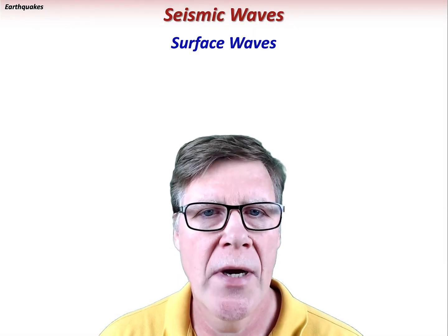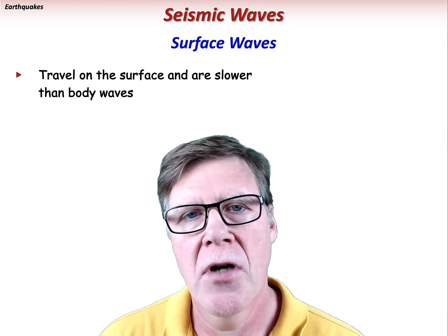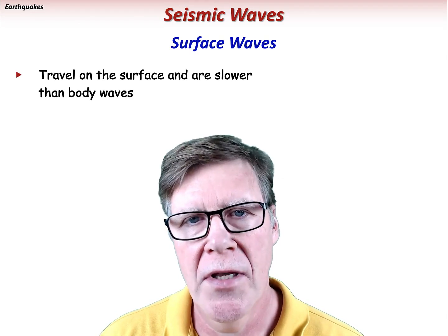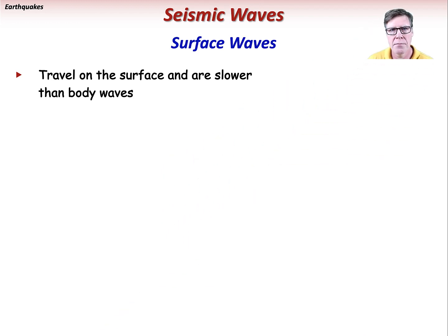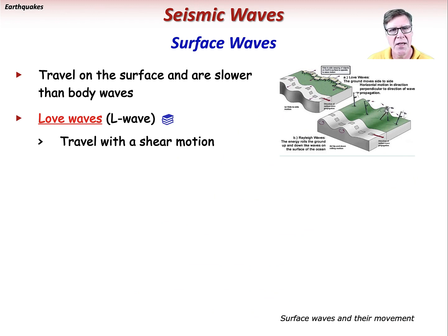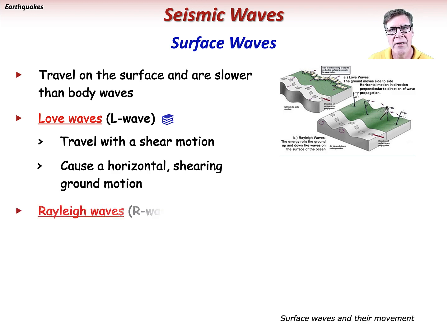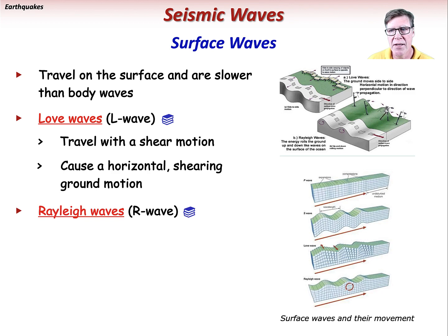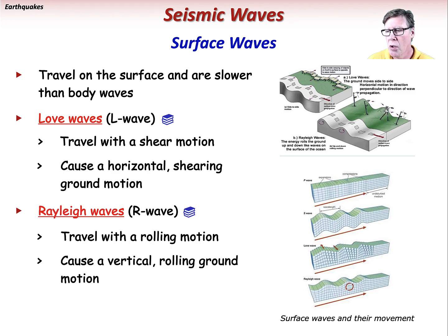Surface waves are seismic waves that reach and travel along the surface of the Earth and are even slower than body waves. Love waves, or L waves, travel with a shear motion, causing a horizontal side-to-side shearing motion. Rayleigh waves, or R waves, travel with a rolling motion, causing a vertical or rolling ground motion. These surface waves are the cause of the most significant damage during earthquake events.